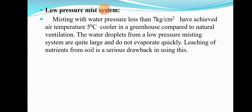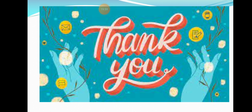Due to low pressure, the droplet size increases and the droplets fall to the ground — this is the drawback of the low pressure mist system. Misting with water pressure less than 7 kg per centimeter square has achieved air temperatures 5 degrees centigrade cooler compared to natural ventilation. However, the water droplets from a low pressure misting system are quite large and do not evaporate quickly, and leaching of nutrients from the soil is a serious drawback of using this system.